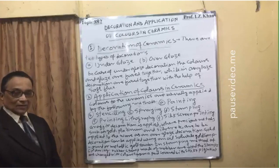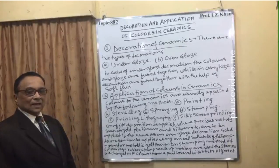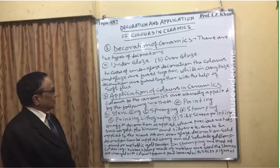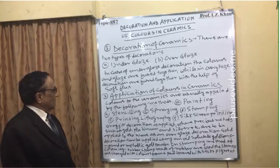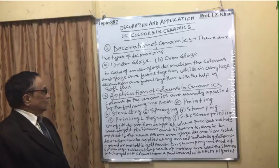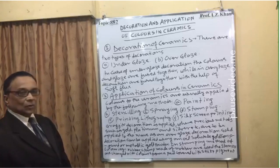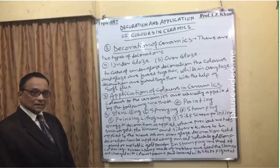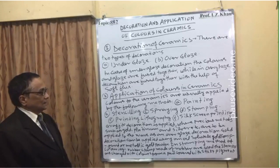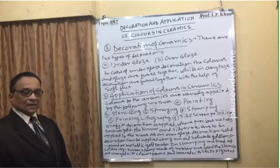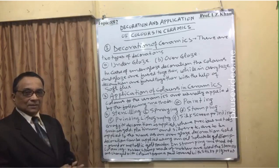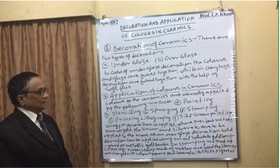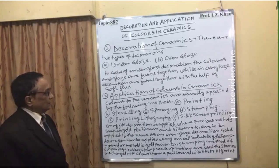In over glaze, the decoration is fused together with the help of soft flux. Soft flux can be from any rock, such as bone flux made by burning and powdering. When the color is mixed with this flux, it is called over glazing. Colors are applied to the ceramic surface by the following methods: (a) painting, (b) stenciling, (c) spraying, (d) stamping using a rubber stamp, and (e) printing.